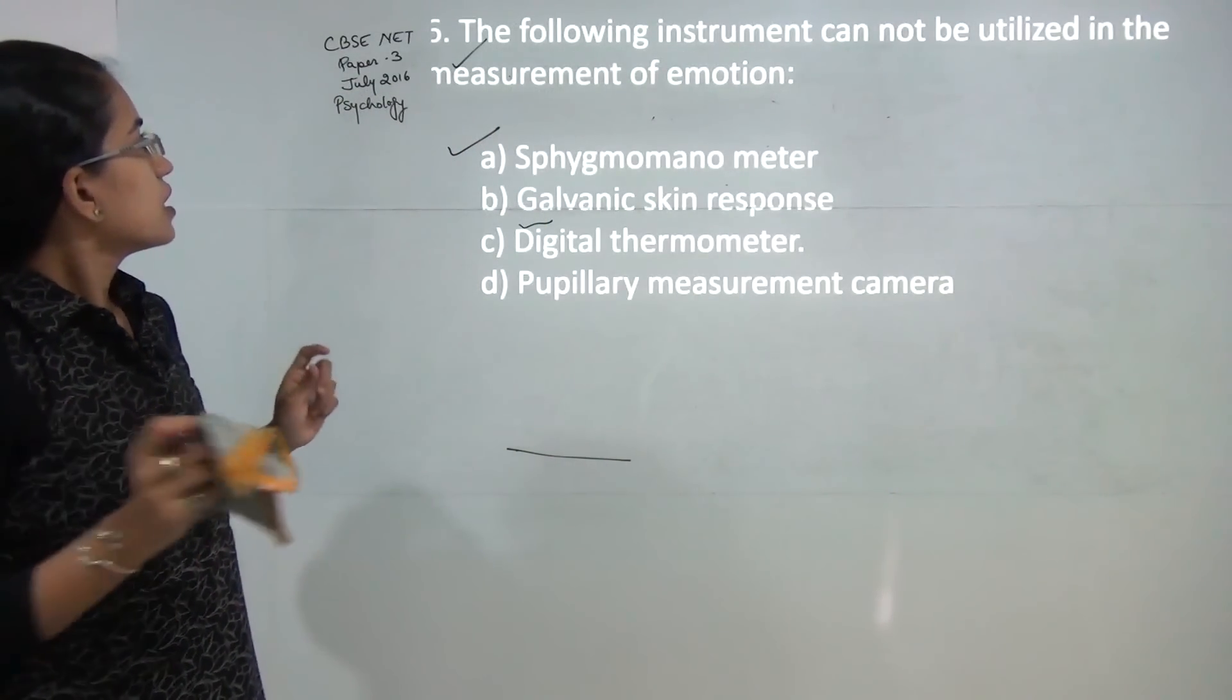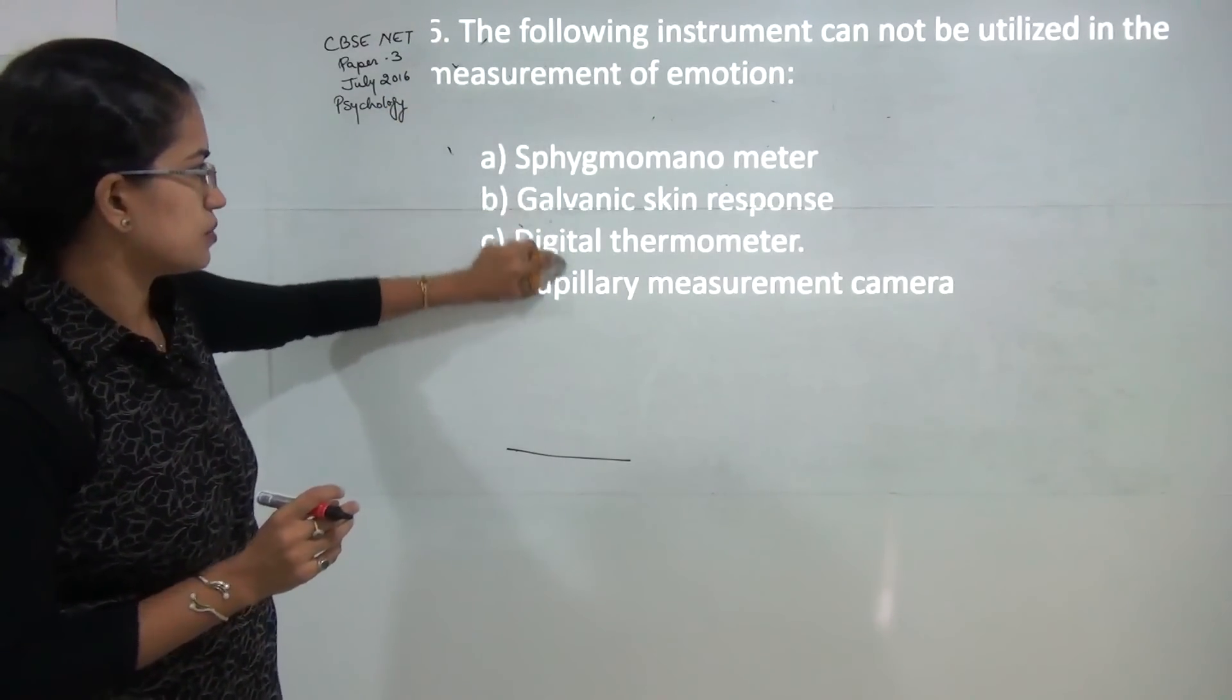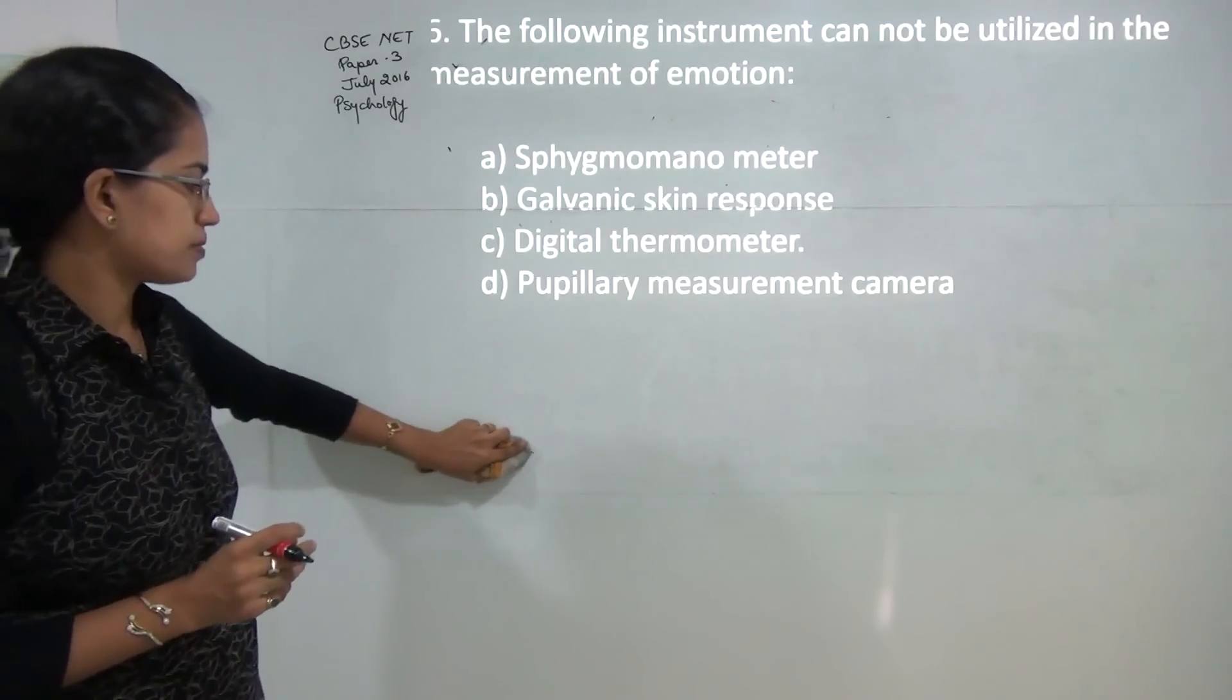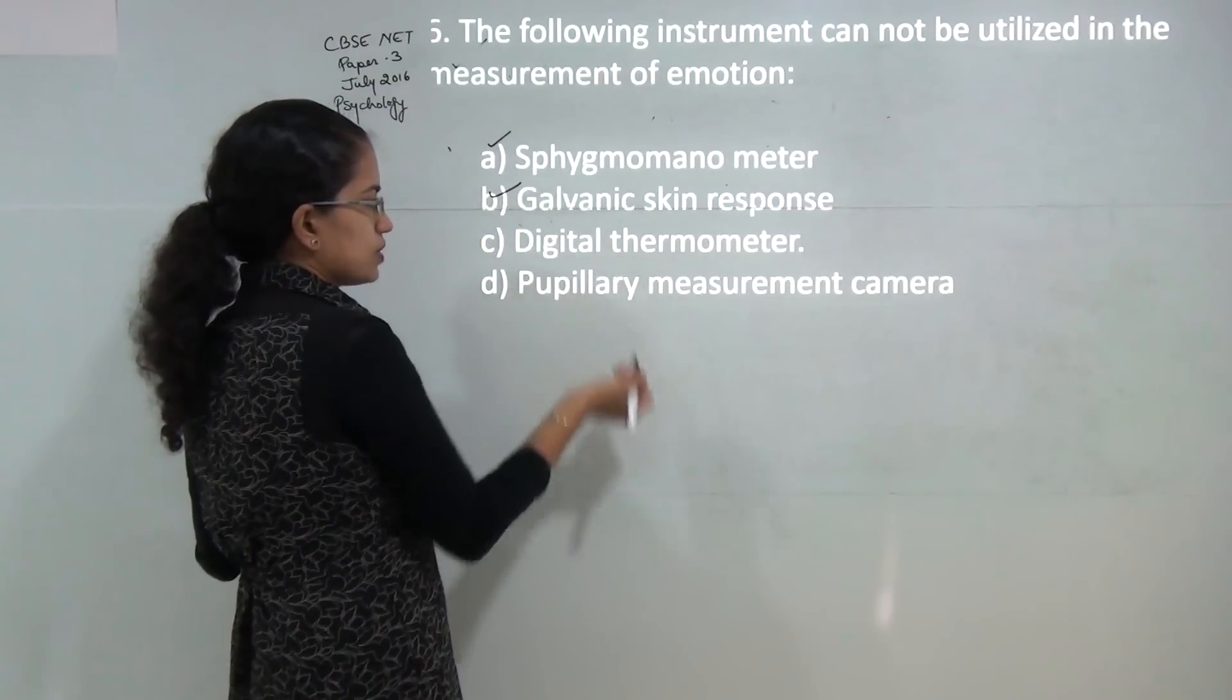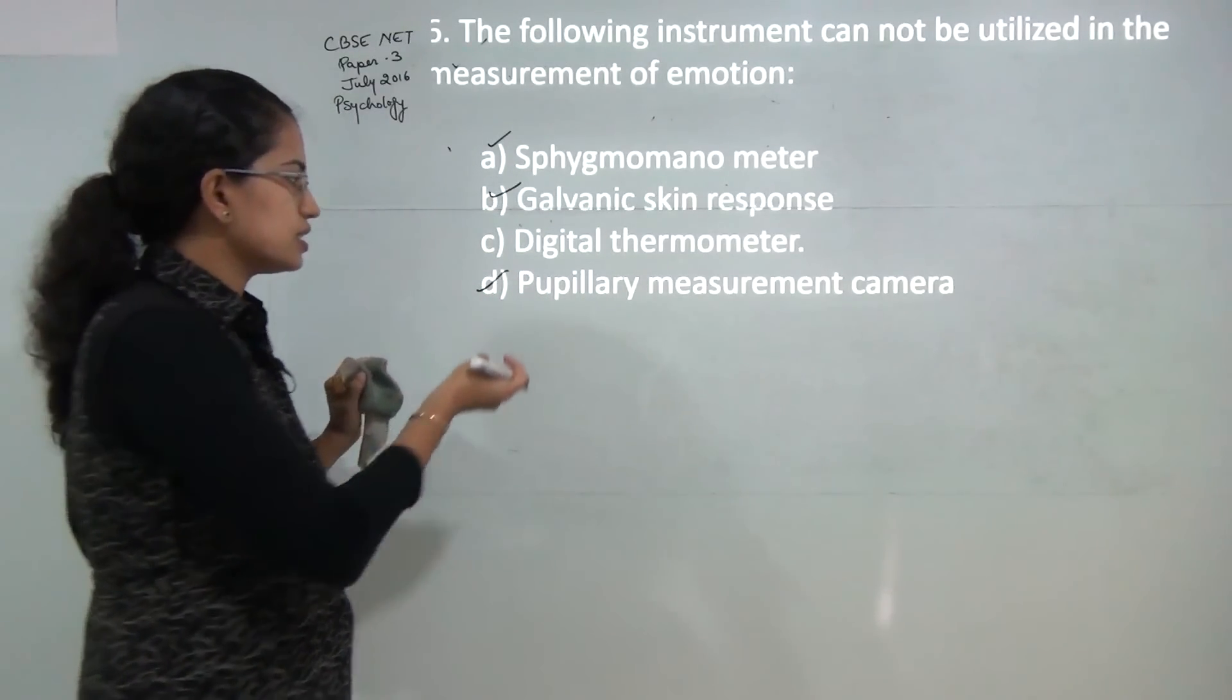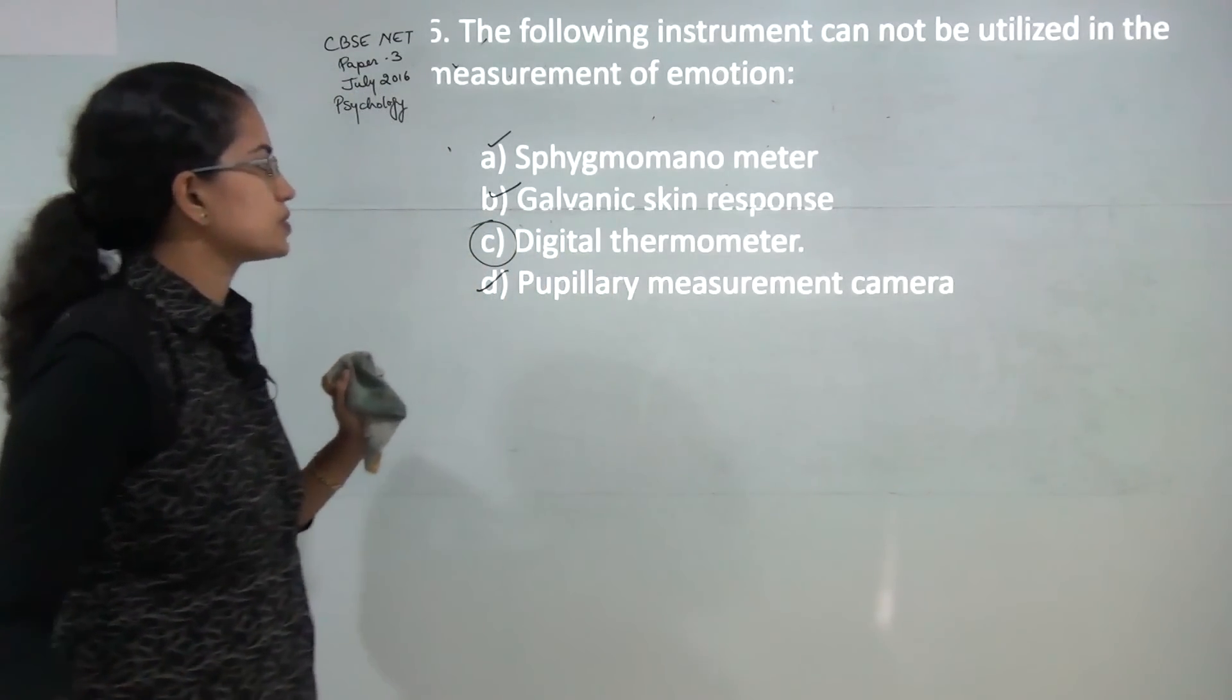Next question: which of the following instrument cannot be used to measure emotion. Sphygmomanometer measures blood pressure. A person who is emotionally aroused will have higher blood pressure, then you have the skin response and pupillary measurement. Digital thermometer is the only incorrect option here. So answer would be C.